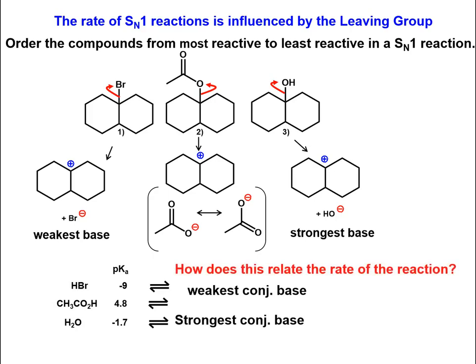How does this relate to the rate of reaction? The less stable the intermediates, the more energy it takes to form them.